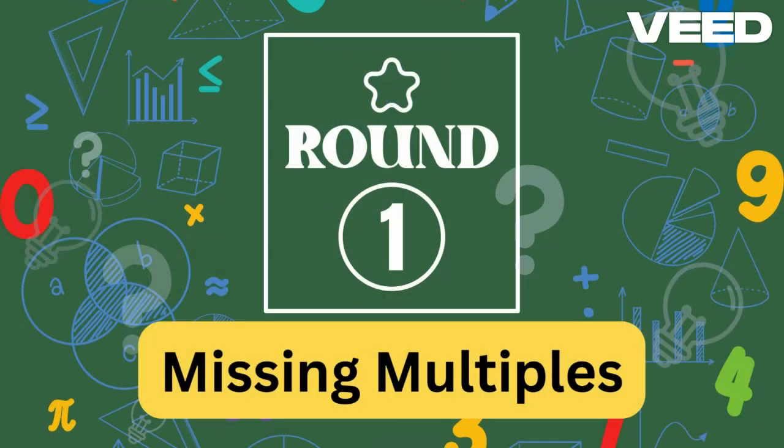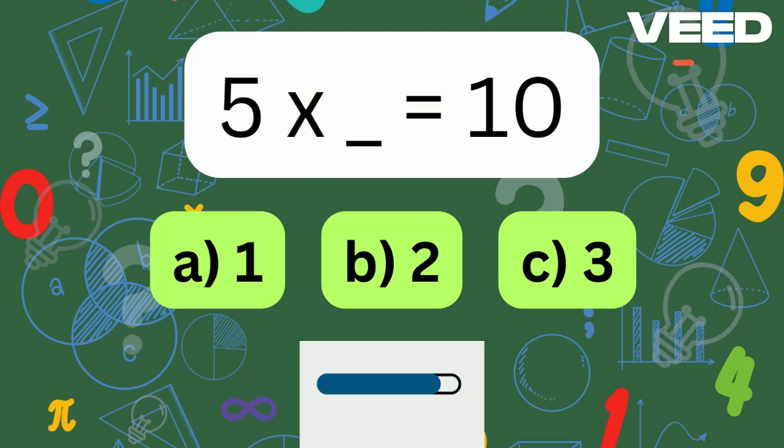Round 1, Missing Multiples. In this round, we'll see a multiplication sentence with a missing number. Your job is to figure out what that number is.